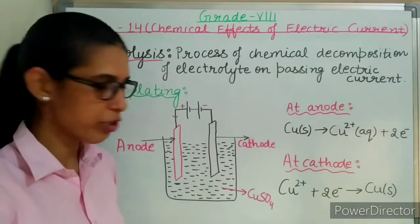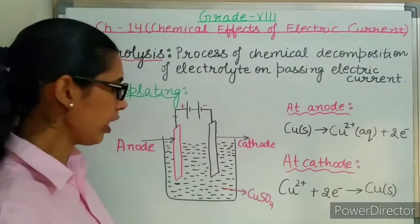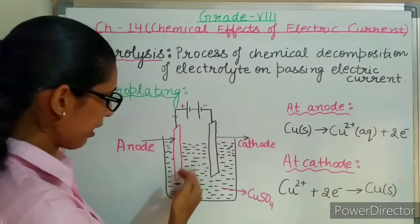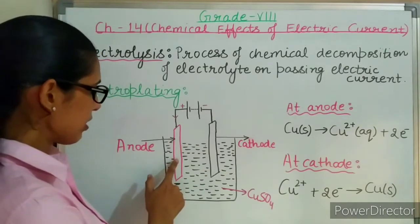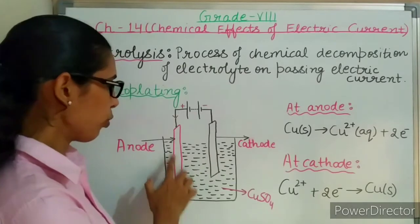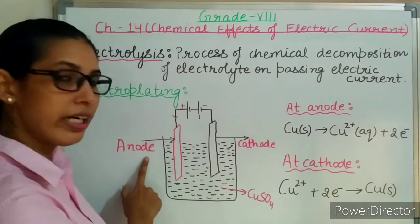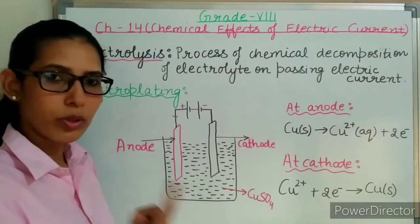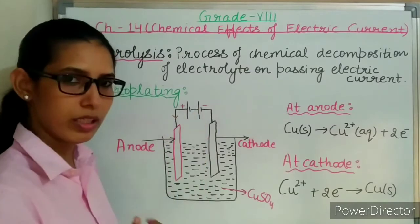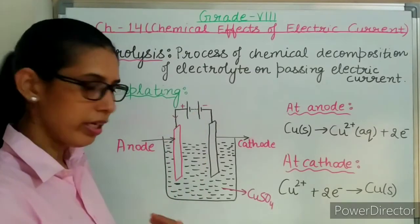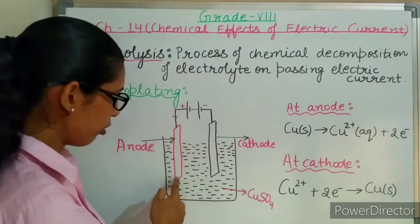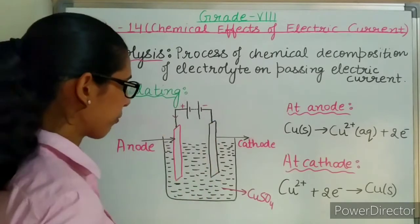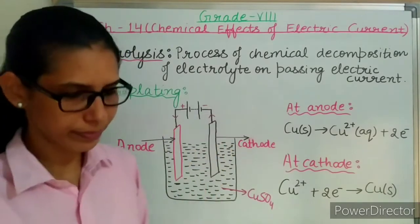Next are electrodes. In this beaker, copper sulfate solution has been taken, and these are the two electrodes. Electrodes are conducting rods which connect the solution to the external circuit. The electrode connected to the positive terminal of the battery is known as the anode, and the electrode connected to the negative terminal is known as the cathode. Electric current always flows from the positive terminal to the negative terminal, so anode is the electrode through which current enters the solution, and cathode is the electrode through which current leaves the solution.